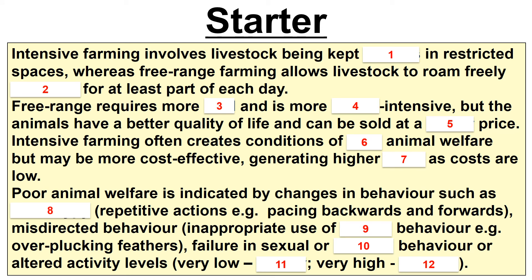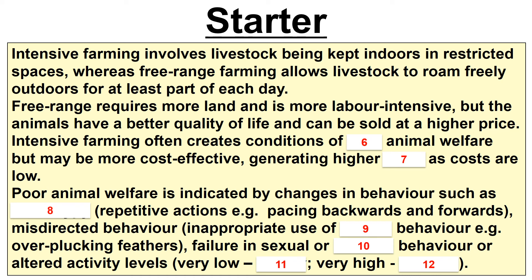As I said at the beginning, there really isn't a lot to this topic — essentially three paragraphs. Put down numbers one to twelve and see if you can write down the answers. Intensive farming involves livestock kept indoors in restricted spaces, whereas free range allows livestock to roam freely outdoors for at least part of each day. Free range requires more land and is more labour intensive, but animals have a better quality of life and products can be sold at a higher price. Intensive farming often creates poor animal welfare conditions, but may be more cost effective, generating higher profit as costs are low.